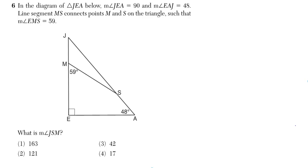In the diagram of triangle JEA below, the measure of angle JEA is equal to 90 degrees. You already labeled it for me with the right angle. And measure of angle EAJ is equal to 48. Again, why do you do this?